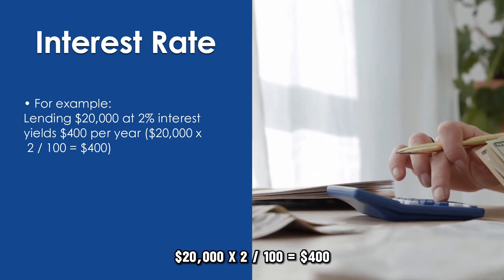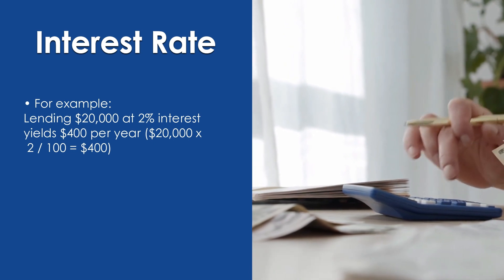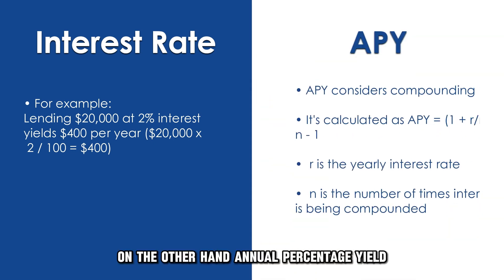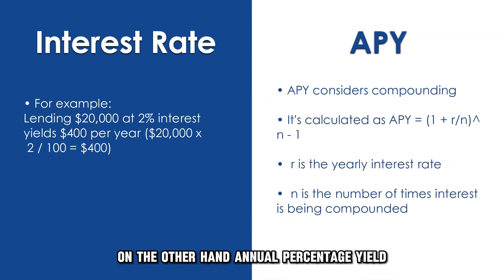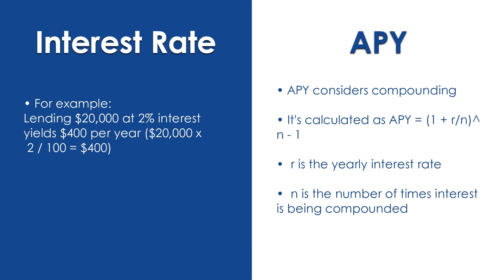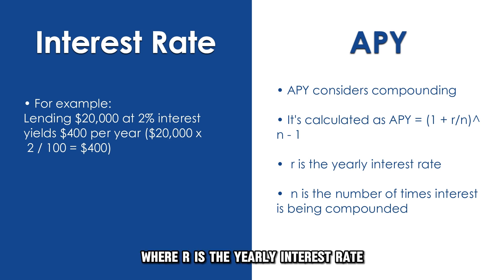On the other hand, Annual Percentage Yield (APY) considers compounding. It's calculated as: APY = (1 + r/n)^n − 1, where r is the yearly interest rate and n is the number of times interest is compounded.